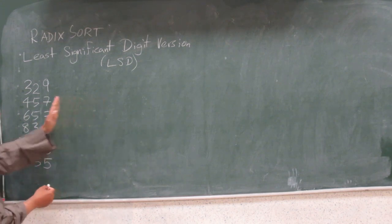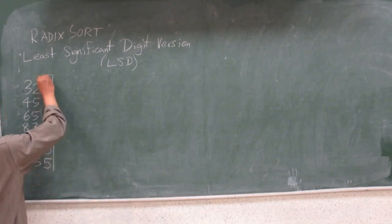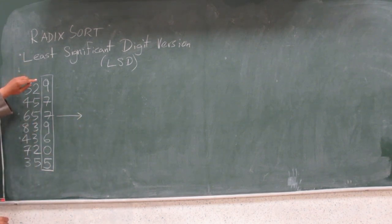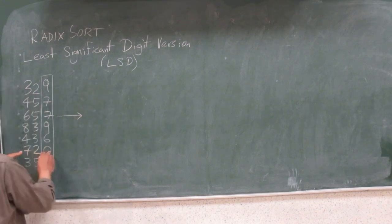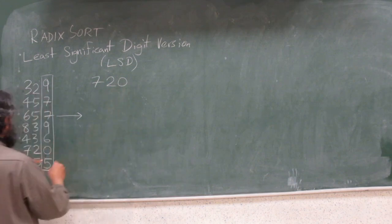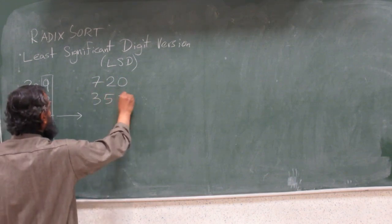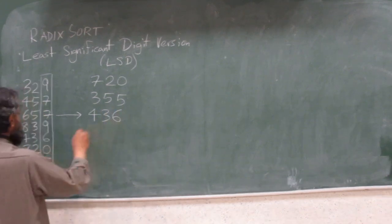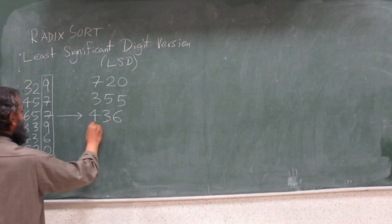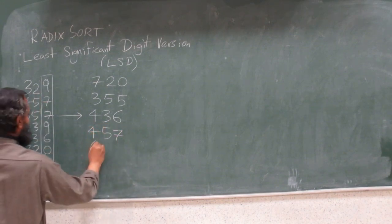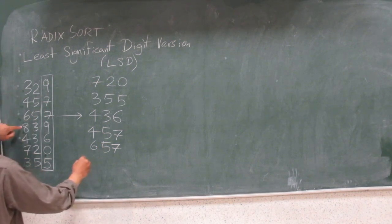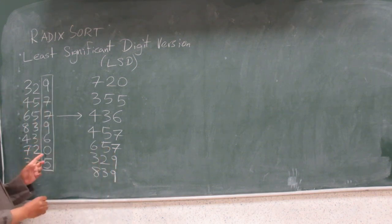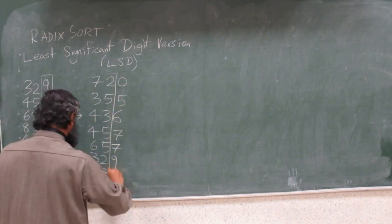Least significant digit version means you go in this order, you start the least significant digit and so on. The least significant digit here is these ones. What are the lowest ones? 0, and so when I take this number with the 0 here, the 70 and 20 goes at the beginning. What's the next smallest number? 3, 5, 5, then we have 2, 6, the 6 number went there, then you have the 2 sevens and then you have the 2 nines. We're done with the least significant digit, we go to the next least significant digit, which is the second digit from the right.